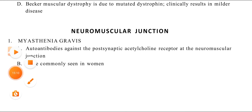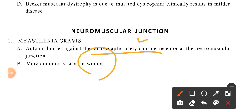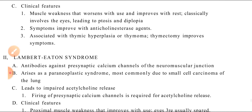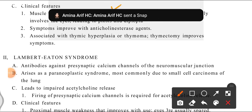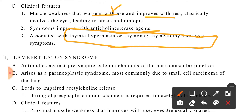Myasthenia gravis has autoantibodies against post-synaptic acetylcholine receptors. It is more commonly seen in women. The muscles are weak and fatigue with use but improve with rest. The eyes are also affected — there is ptosis and diplopia. Symptoms improve with acetylcholinesterase inhibitors. It is associated with thymic hyperplasia.